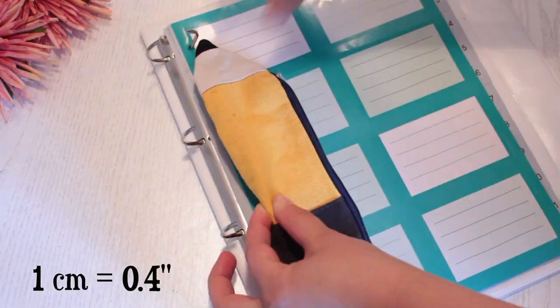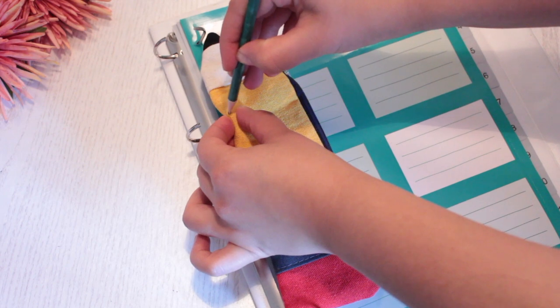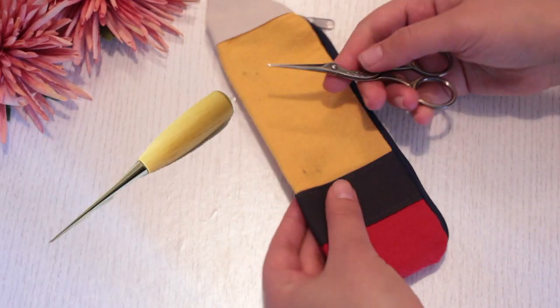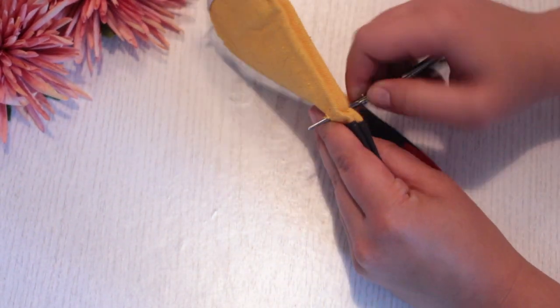Place the binder hooks a centimeter from the edge of the pencil case, then make markings on each of the hooks. You can use an awl or a very pointy scissor and just poke through these markings.